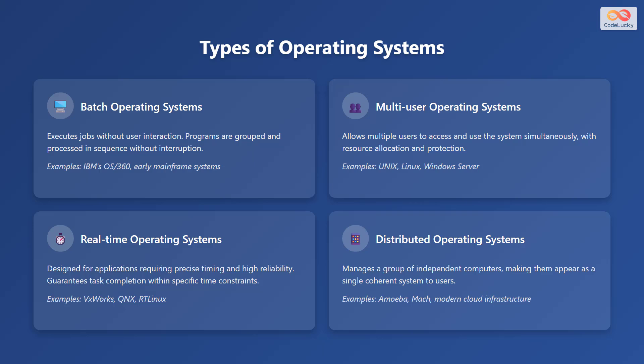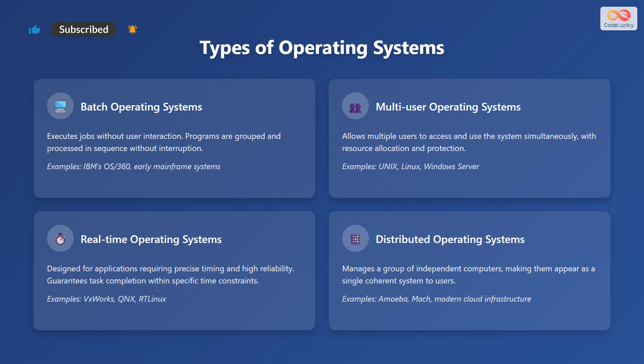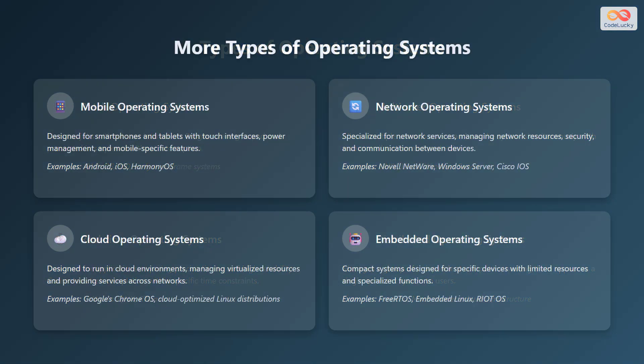Distributed operating systems manage a group of independent computers, making them appear as a single coherent system to users; examples include Amoeba, Mach, and modern cloud infrastructure. Mobile operating systems are designed for smartphones and tablets with touch interfaces, power management, and mobile-specific features; examples include Android, iOS, and Harmony OS.